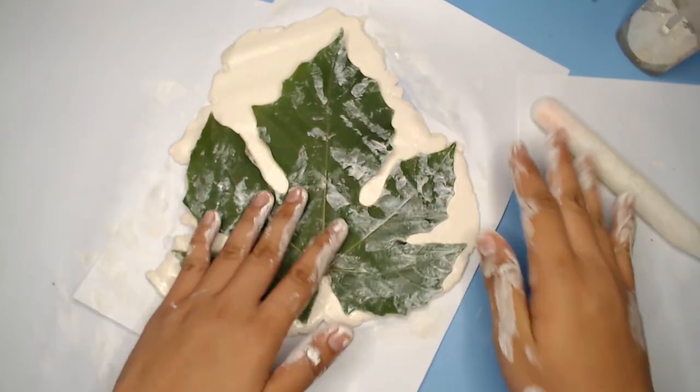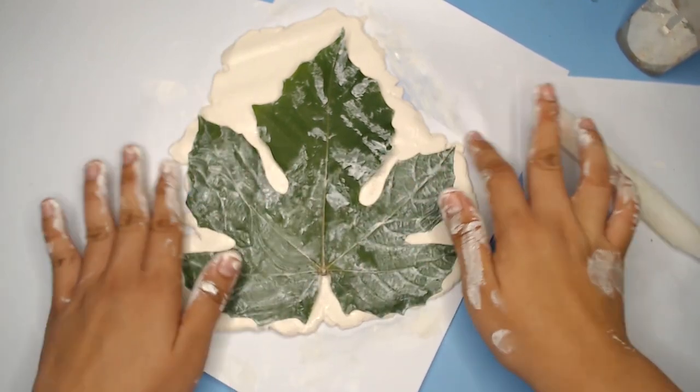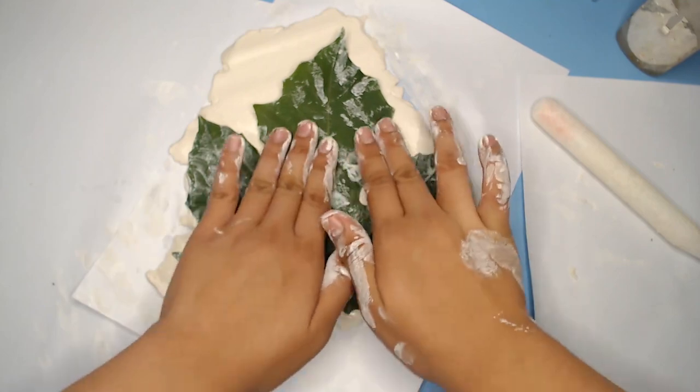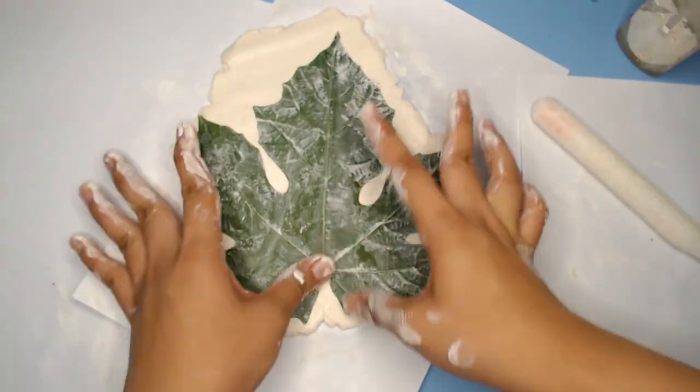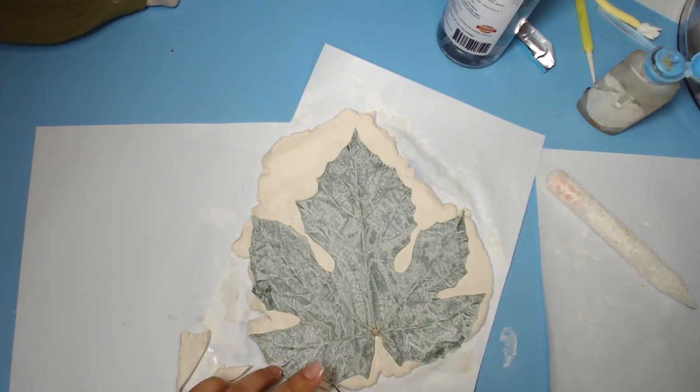After flattening, lay the back of the leaf on top. Using a scalpel, carefully remove the excess clay around the leaf.